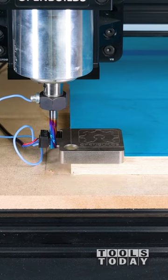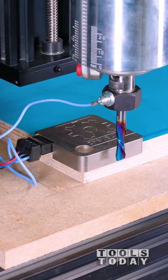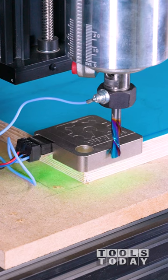Finally, it'll move to the front to set the Y0 position. You can see the green light lights up every time to show that it's contacting the probe surface.